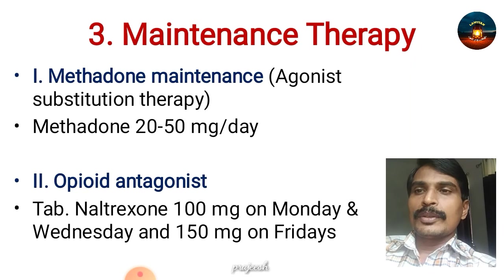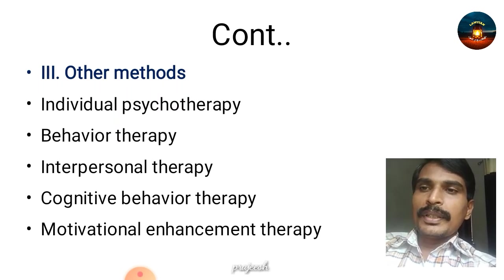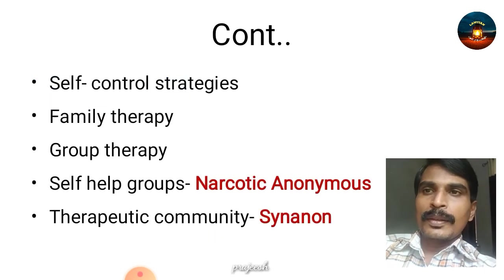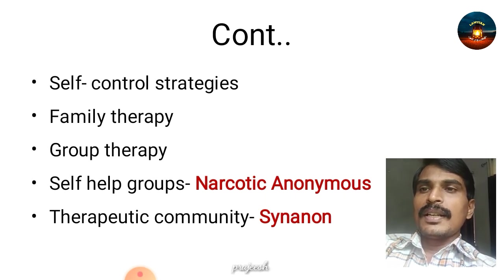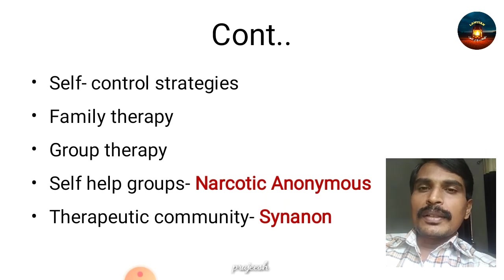The two important drugs in maintenance therapy are methadone and naltrexone. Other methods are psychological methods including individual psychotherapy, behavior therapy, interpersonal therapy, cognitive behavior therapy, and motivational enhancement therapy. These are done to ensure the motivation for the patient to abstain from the drug and continue abstinence for prolonged periods of time.